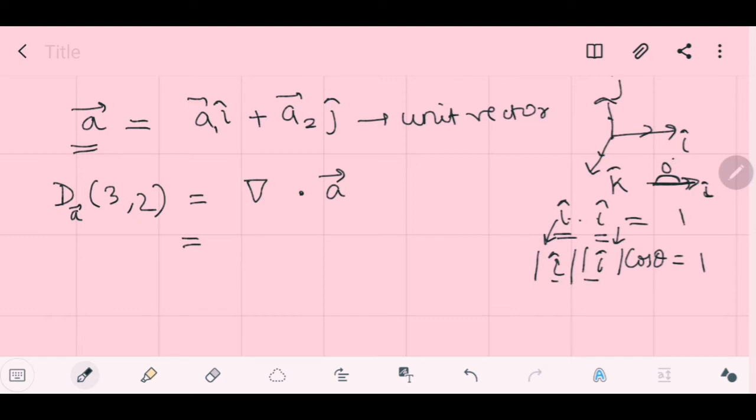So, because it is unit vector, i magnitude is 1. This is 1. And cos 0 is also 1. So, hence, the dot product of same vectors, a dot a, same unit vectors is 1.